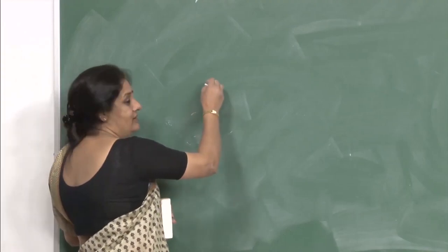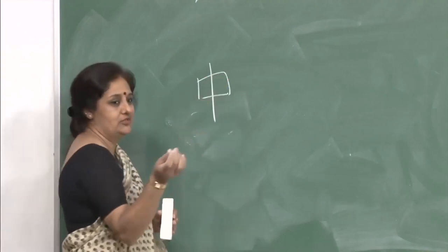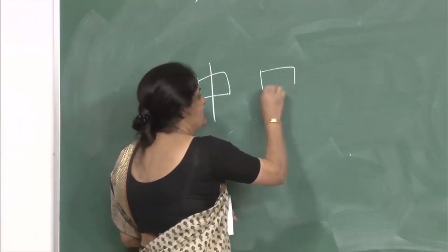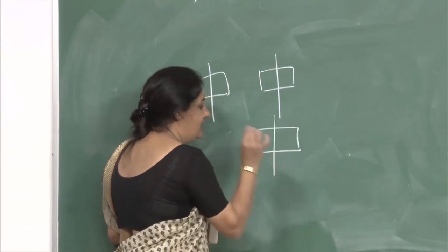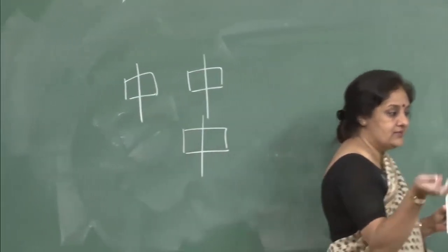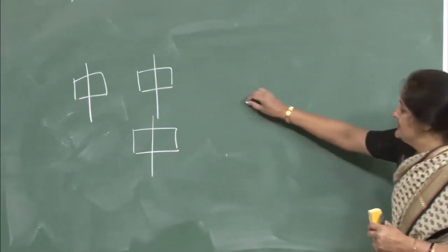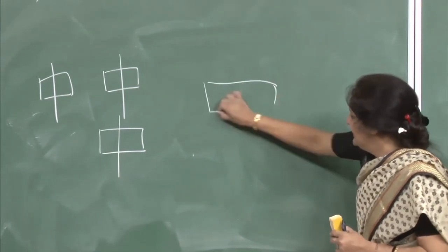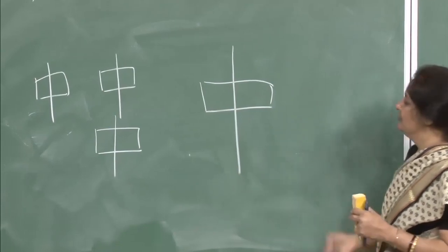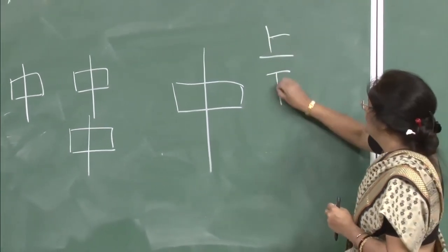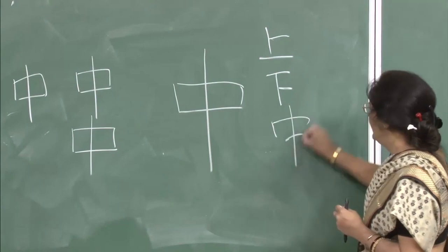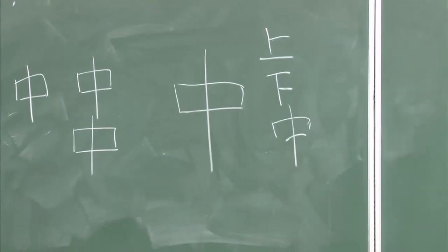The third kanji is naka — which you have already done. It is a four stroke character. It means inside or passing through — this is actually a board and something is passing through the board, which is how the character came into being. A quick revision: we have ue, shita and naka — three characters.